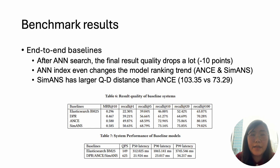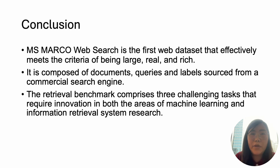The final challenge is the end-to-end retrieval system challenge. We find that after ANN search, the final result quality drops significantly. Moreover, ANN indexes even change the model ranking trend between ANC and SIM-ANS. We hope MSMACO Web Search can serve as a benchmark for modern web-scale information retrieval, facilitating future research and innovations in diverse directions.